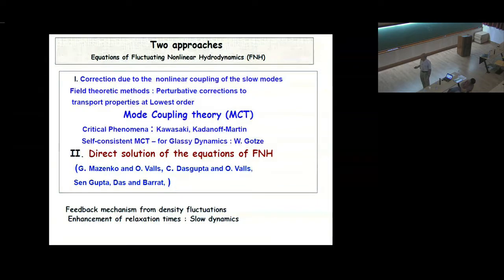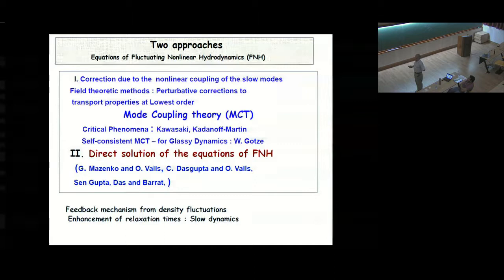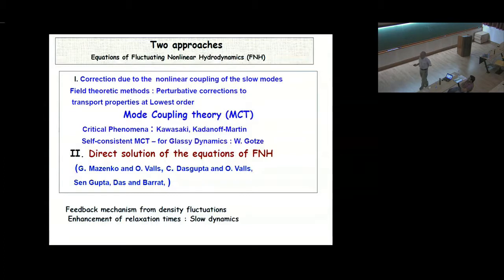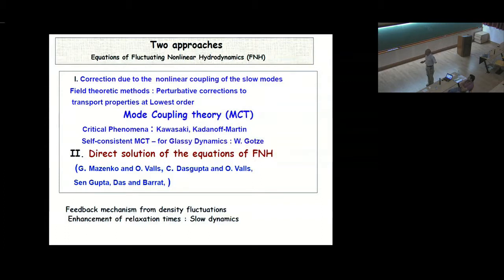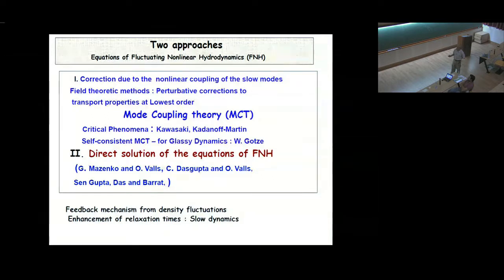What they did is use these corrections in a self-consistent manner, which gives rise to a feedback mechanism and creates slow dynamics. The other way is direct solution of the fluctuating hydrodynamic equations — these are Langevin equations. One can directly solve them and calculate correlation functions. That is where, of course, Oriel Valls and Gene Mazenko and others did early work, then John Zinn and Oriel did a lot of work on it. I worked on this with one of my students and John Bhatt later on. This is a parallel method instead of using the usual perturbative evaluation.